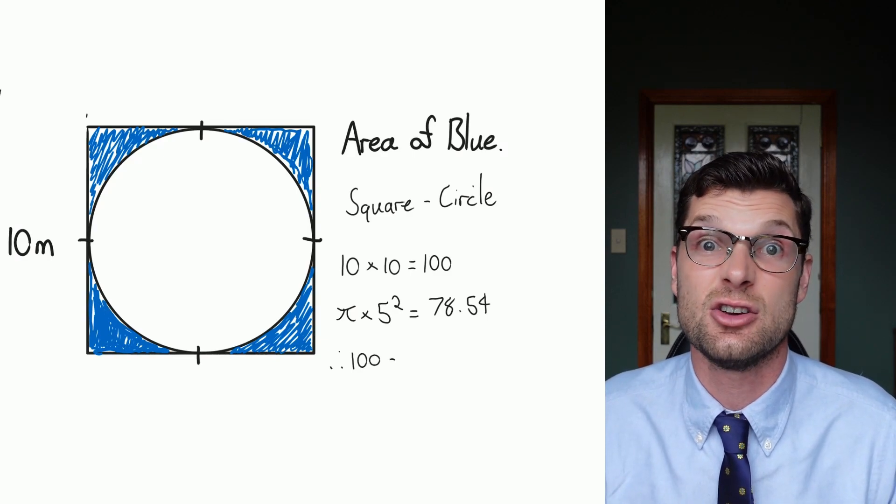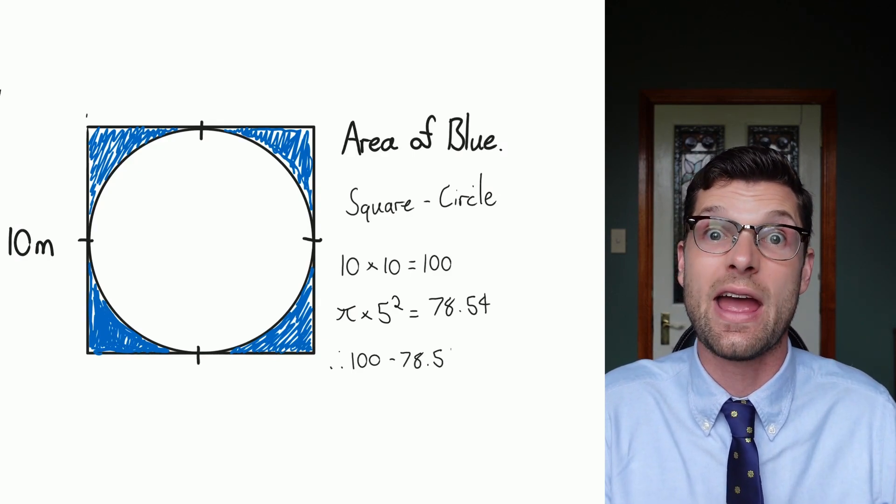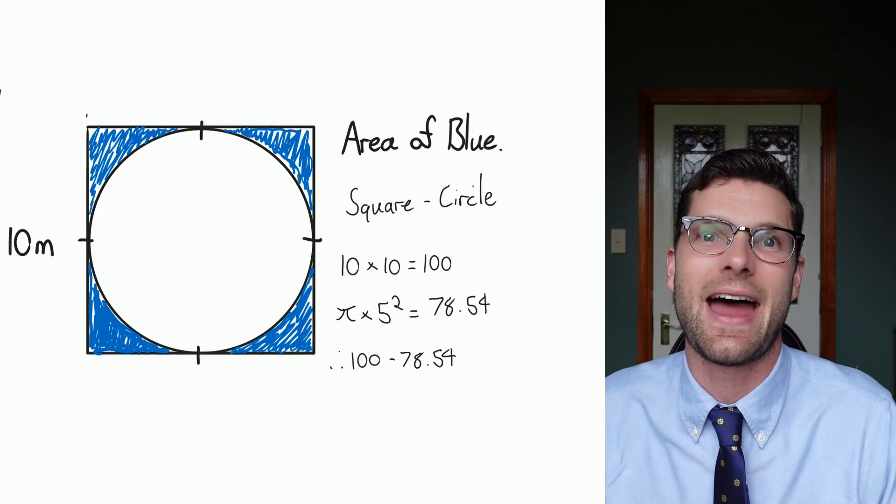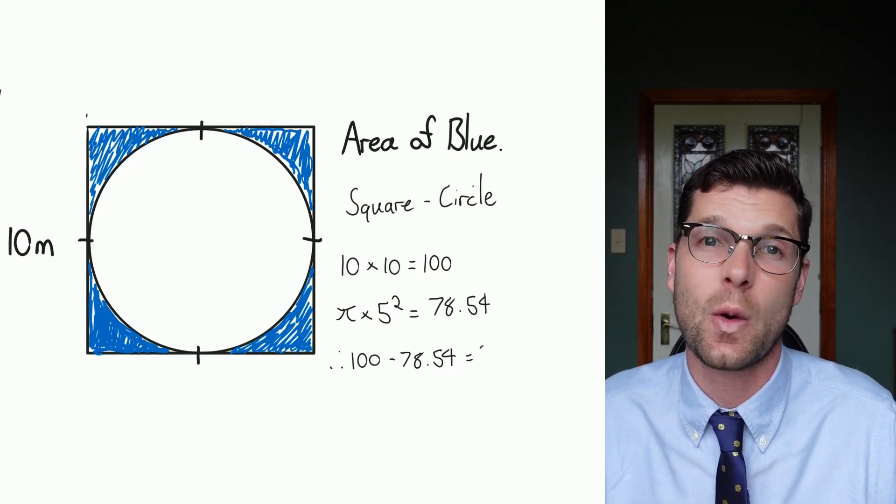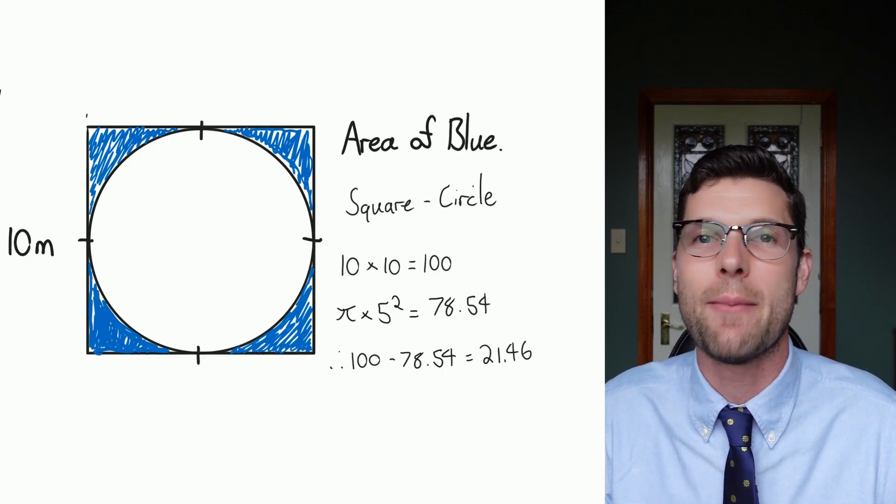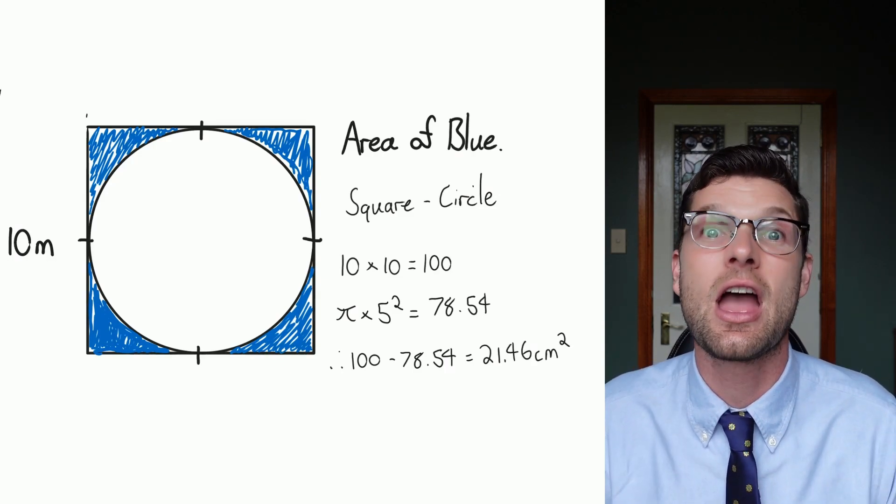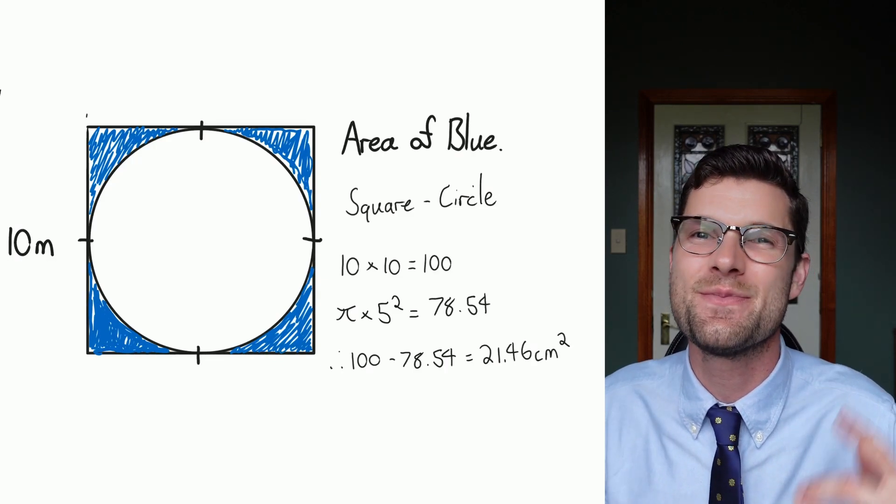So once I throw that into my calculator I get the answer of 78.54. So my last thing that I've got to do I've already written down. Square 100 minus that answer for the circle. Throw that into my calculator and I get the answer of 21.46 remembering centimeters squared. I do hope you found this lesson helpful and I'll see you later.